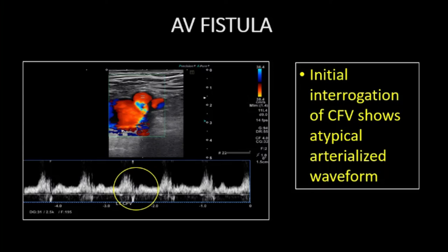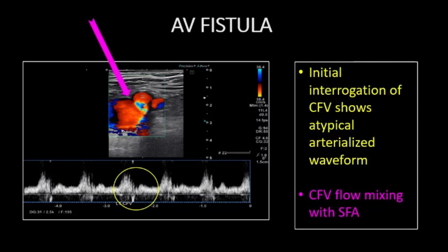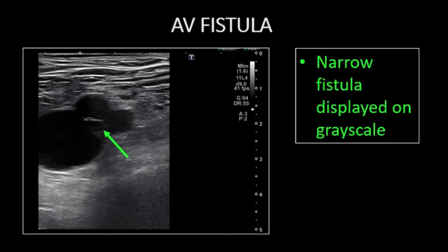In contradistinction, in an arteriovenous fistula, there is actual mixing of arterial and venous blood leading to a classic waveform of its own. This exam was performed as a venous duplex ultrasound. The first remarkable finding is the arterialization of the venous waveform. You can see the venous tracing punctuated by a systolic peak expected in the adjacent common femoral artery. The color doppler demonstrates mixing of common femoral artery and vein blood flow. The common femoral vein diameter exceeds expectations as a consequence of high flow state from arterialization.